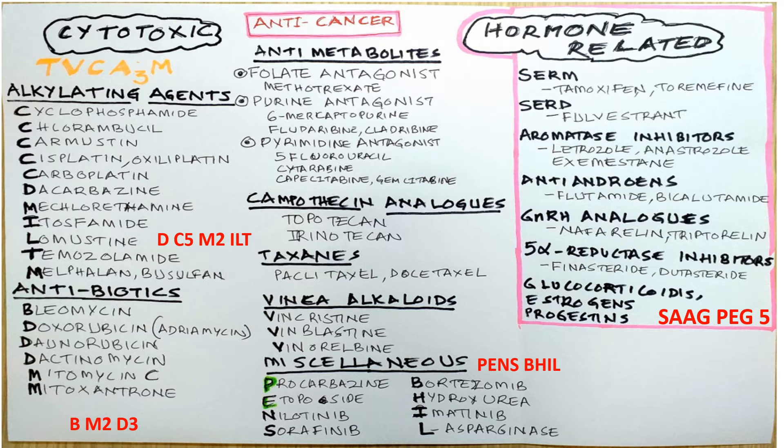Among the anti-metabolites we have three subcategories: the folate antagonists, the purine antagonists, and the pyrimidine antagonists. Among the folate antagonists we have methotrexate. Among the purine antagonists we have 6-mercaptopurine, fludarabine, and cladribine.